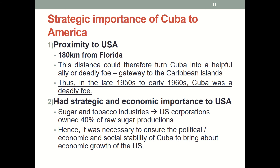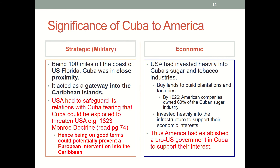Cuba is very important in terms of its proximity to the United States because it's just 180 kilometers away from Florida. Cuba could be a helpful ally or a deadly foe, especially as a gateway to the Caribbean islands. In the late 1950s to early 1960s, Cuba ended up becoming a deadly foe. Cuba also has strategic and economic importance to the United States, especially in the sugar and tobacco industries. US corporations owned up to 40% of raw sugar production, so it was very important to ensure the political, economic, and social stability of Cuba.